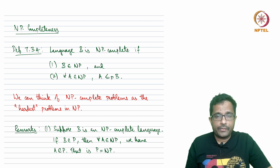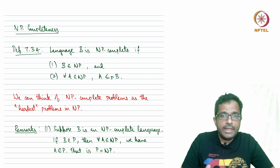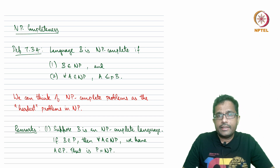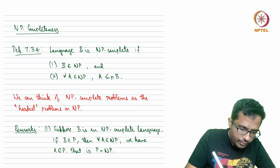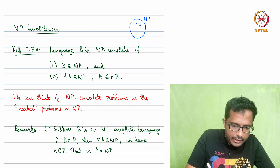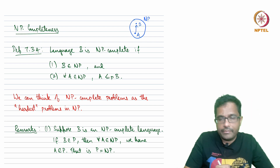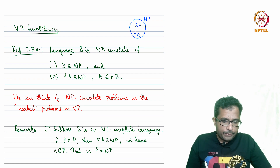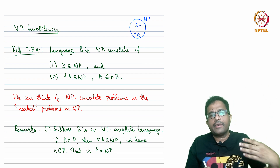In this lecture we will define what is NP-complete. NP-complete is a very important concept as you may have heard. We say that a language B is NP-complete if that language is in NP and all the languages in NP are reducible to B. This means that B is kind of a central language — if you can decide B, then we know that all the languages in NP are reducible to B.